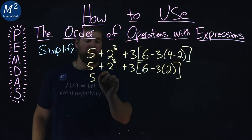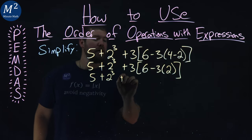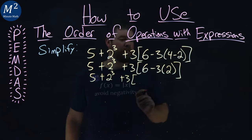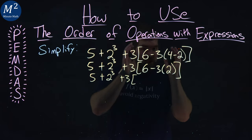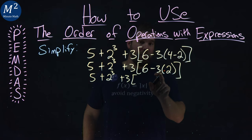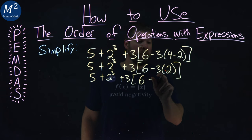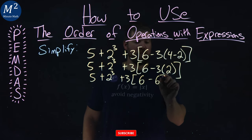So everything else, we just write down 5 plus 2 to the 3rd plus 3 in brackets here. Now, within the bracket, we have to do our own version of PEMDAS. Multiplication is happening first. We have multiplication and subtraction. Multiplication happens first here. So 6 minus 3 times 2, which is also 6.